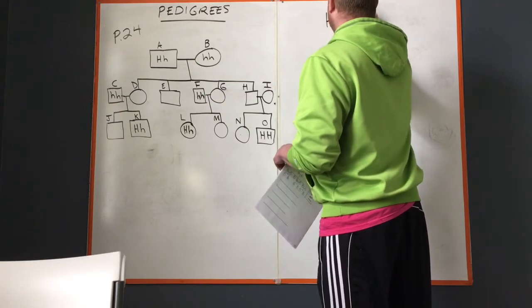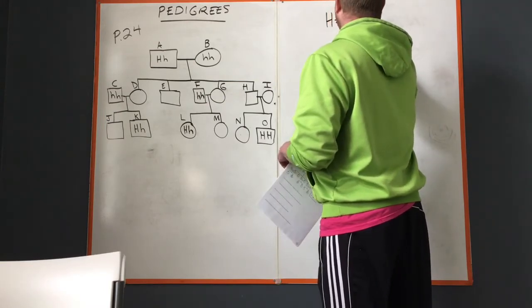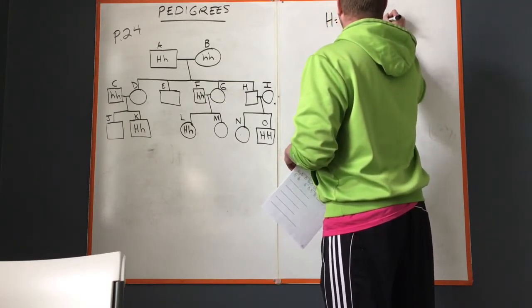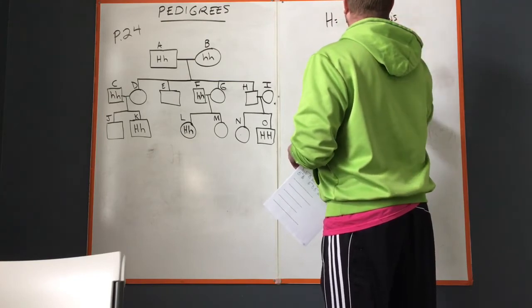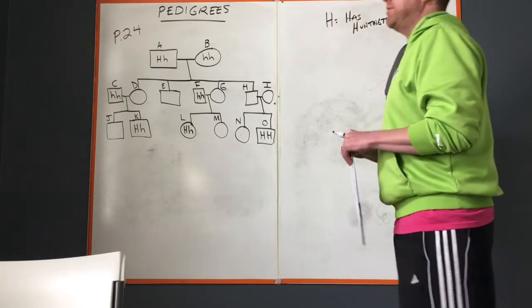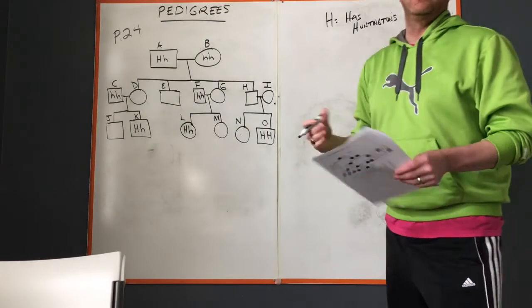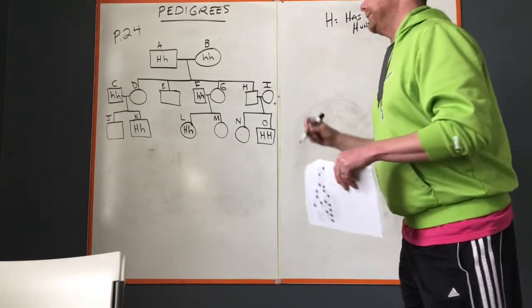If it's dominant, the big H means has Huntington's. This is a particularly challenging thing for a pedigree and for any family that has it because it only takes one big H to get it.